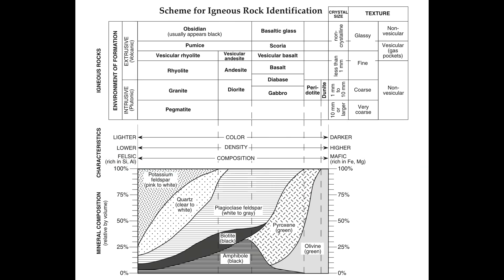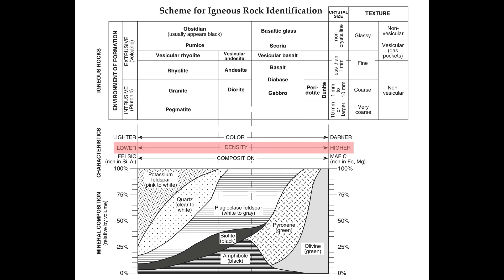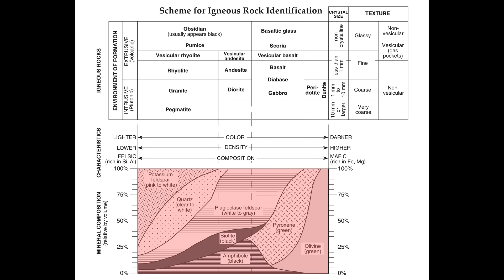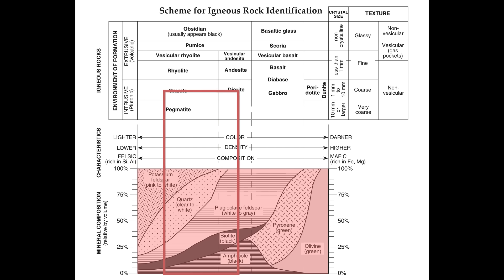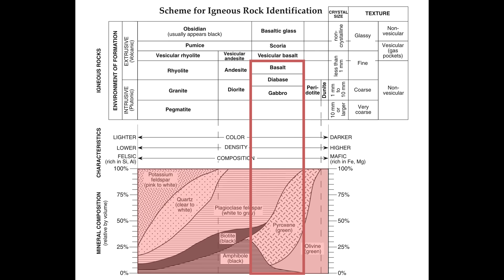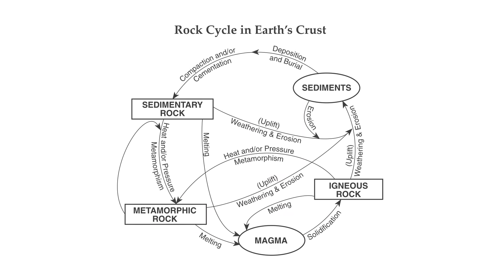Zooming back out, this center area of the chart shows us color — rocks on the left side are lighter in color and on the right they're darker. Here's density: the left side they're less dense, and the right are more dense. Here's composition: the left side are felsic, meaning they're rich in silicon and aluminum, and the right side are mafic, rich in iron and magnesium. The bottom of the chart shows mineral composition. We simply find the igneous rock we're interested in, like pegmatite, and look down beneath it to see it commonly contains potassium feldspar, quartz, plagioclase, biotite, and amphibole. Similarly, basalt, diabase, or gabbro contain other minerals like pyroxene and olivine.